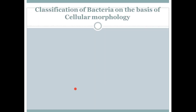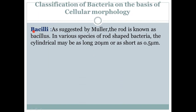The first form is bacilli. As suggested by Mueller, a rod-shaped bacterium is known as a bacillus. In various species of rod-shaped bacteria, the cylindrical shape may be as long as 30 micrometers or as short as 0.5 micrometers. These rod-shaped bacteria are known as bacilli.